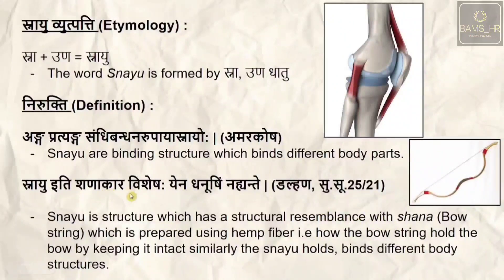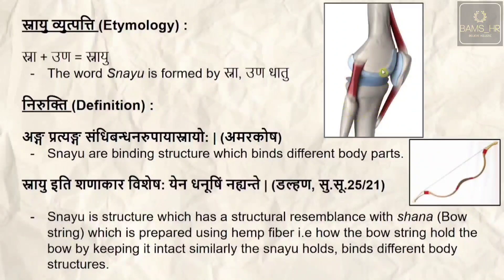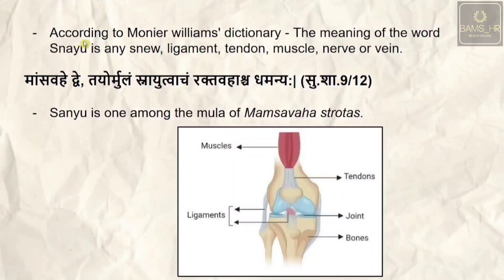The term shanaakara vishesha yenadhatum nyayante means a structure prepared from a hemp fiber. Shana is a bow with a string made from hemp fiber — just as that string holds the bow intact, similarly snayu — whether tendon, ligament, or muscle — holds the body parts, the anga pratyanga, intact.